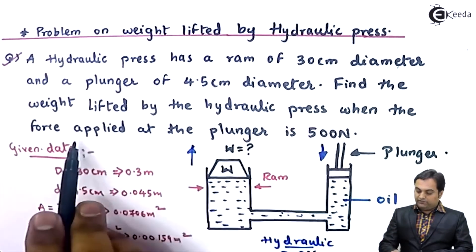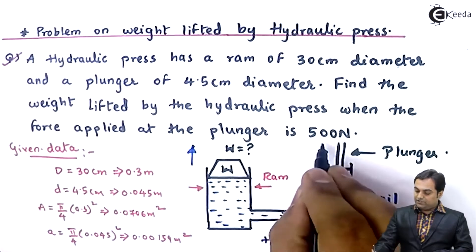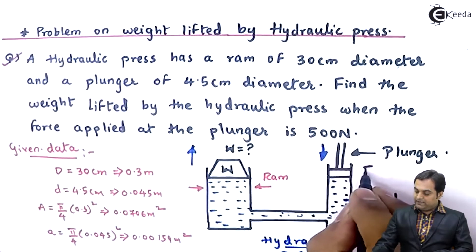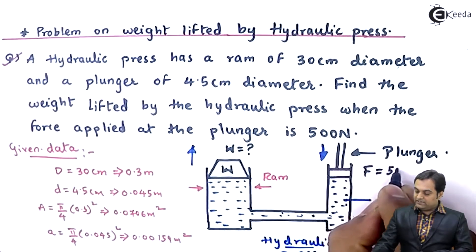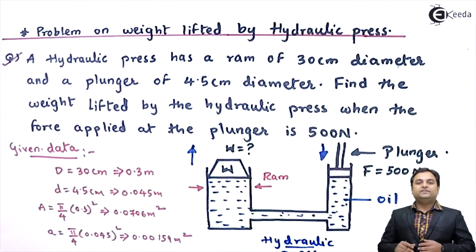By the hydraulic press, when the force applied at the plunger is 500 newton. At the plunger, the force which we are applying, I'll denote it as F, it is 500 newton. So this much is the data given.